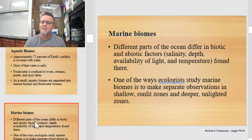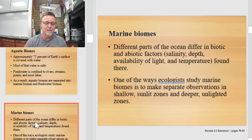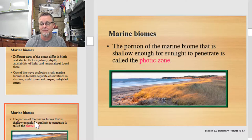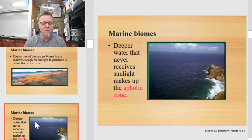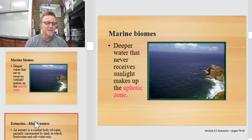Different parts of the ocean differ in biotic and abiotic factors: salinity, depth, availability of light, temperature — all different. And subsequently, the life we find in those areas is also different. One way ecologists study marine biomes is to make separate observations in shallow, sunlit zones and deeper, unlit zones. The shallow zone is called the photic zone, because that's where photosynthesis is going on. The deeper water that never receives light is the aphotic zone — there is no photosynthesis there.